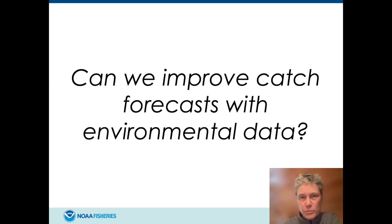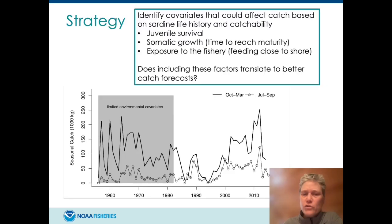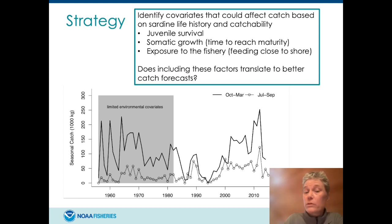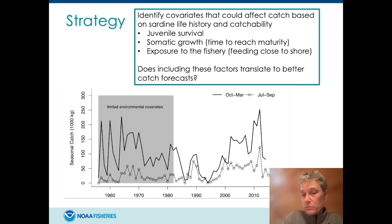Our main question for this paper was: can we improve catch forecast by adding environmental data to our models? Our strategy was to identify covariates that could affect catch based on sardine life history and catchability. There are two basic ways these covariates could affect landings: they could affect abundance by affecting recruitment, survivability, or somatic growth, or they could affect catchability. Since this is a coastal fishery, a covariate that drives sardines away from or closer to the coast would affect the landings.